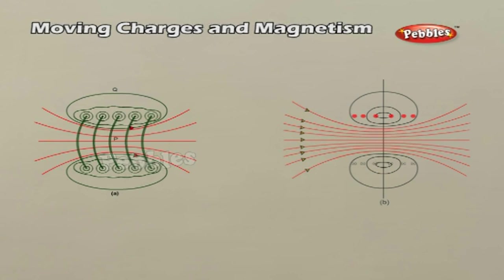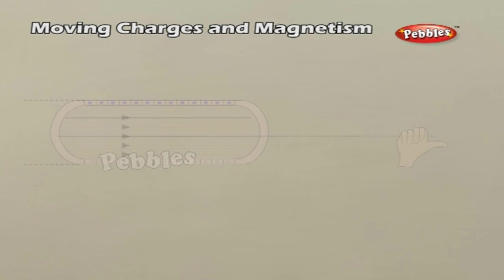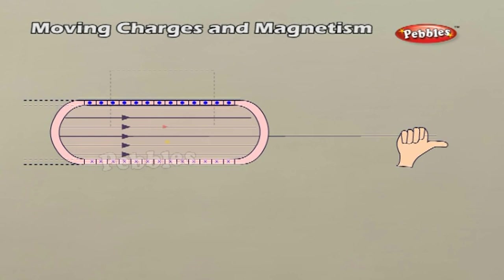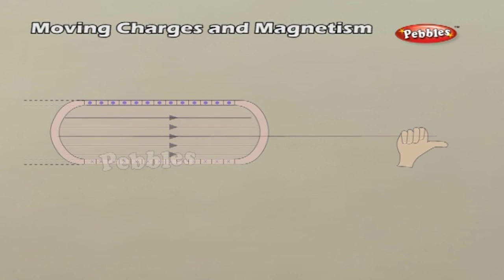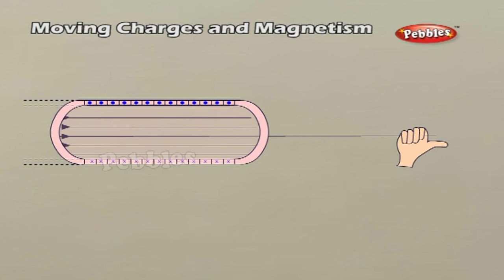The field at the exterior midpoint Q is weak and along the axis of the solenoid, with no perpendicular or normal component. As the solenoid is made longer, it appears like a long cylindrical metal sheet, as represented in the figure. The field outside the solenoid approaches zero, and we assume it to be zero. The field becomes everywhere parallel to the axis.